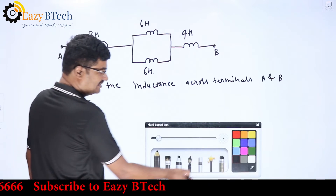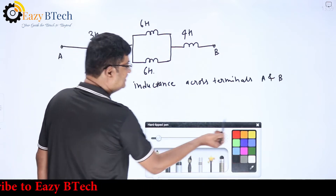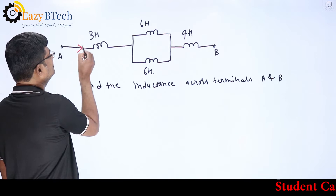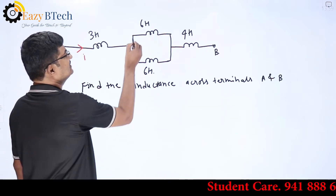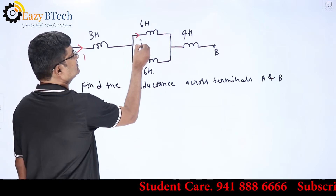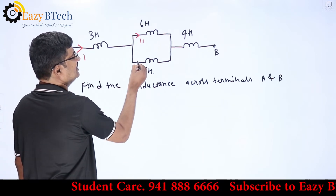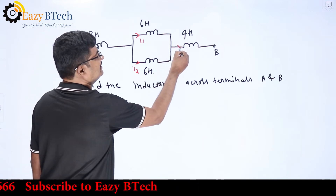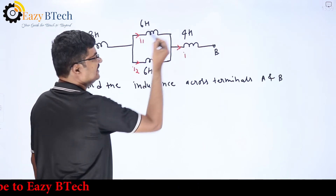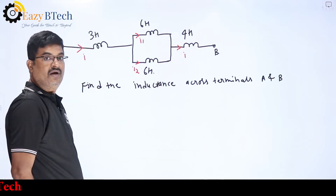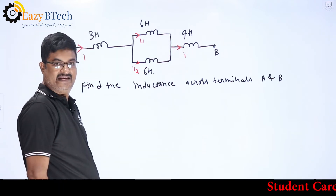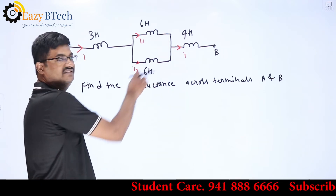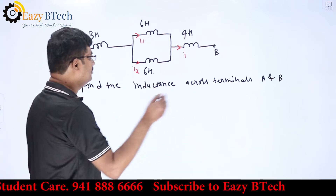Here we will be using current division. From current I entering, it has divided as I1 and I2, and then both currents combine again as I. By seeing the current division, I can say that this 6 Henry and this 6 Henry are in parallel.